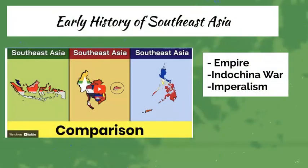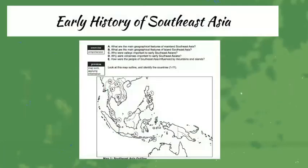We'll then move on to the early history of Southeast Asia by looking at three different empires, discussing the causes and effects of the Indochina war, and looking at the geography and trade routes that helped shape these early cultures, while also reading about its history and analyzing the way Europeans made an impact on Southeast Asia — that's the topic of imperialism.